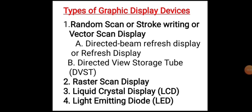Next we discuss types of graphics display devices. Four types of display devices are commonly used: first, random scan or stroke writing or vector scan type display; second, raster scan display; third, liquid crystal display or LCD; and fourth, light emitting diode or LED display.